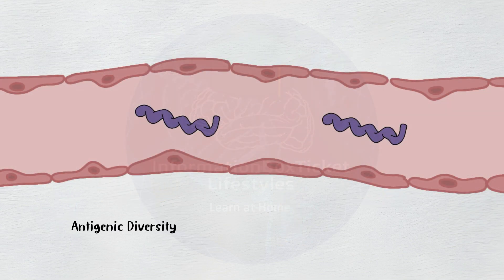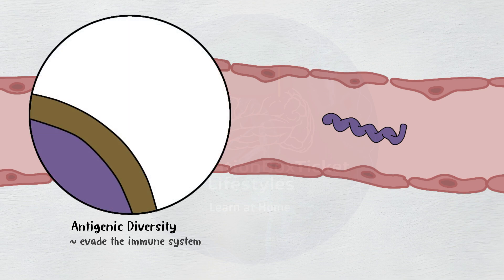Through antigenic diversity, Borrelia species can evade the immune system once they are within the circulation. Variable small proteins, or VSP, and variable large proteins, or VLP, are surface proteins found on the outer membrane of Borrelia. Because these surface proteins are ever-changing, Borrelia may repeatedly elude the immune system.